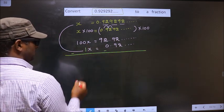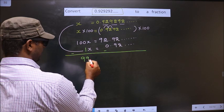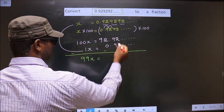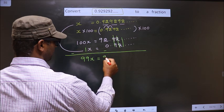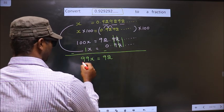So 100x minus 1x is 99x equals... Here, all this cancels out. You will be left with 92. Now...